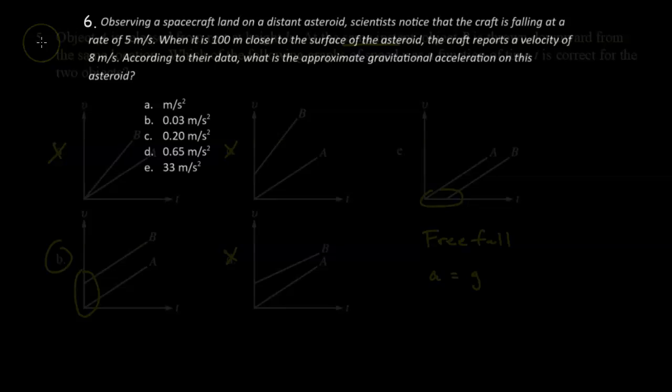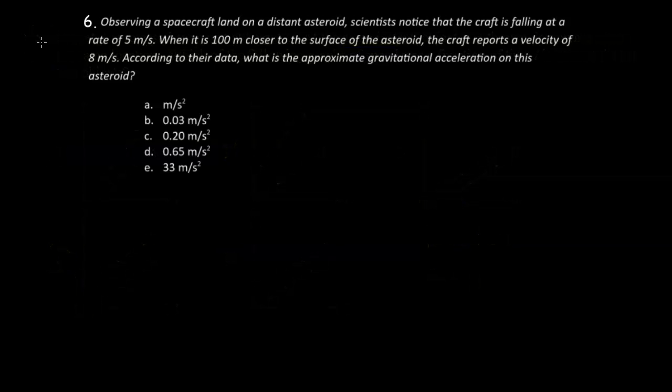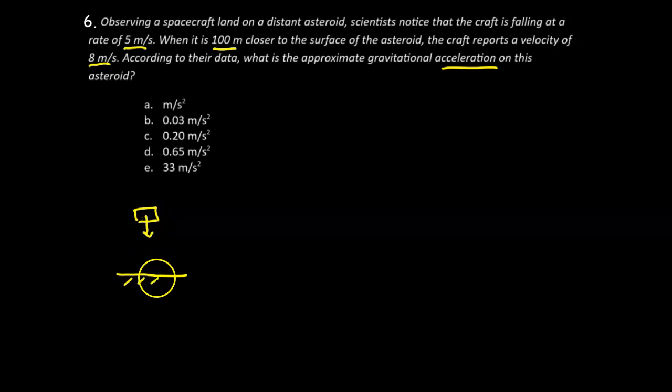Question 6. Observing a spacecraft land on a distant asteroid, scientists notice the craft is falling at a rate of 5 meters per second when it is 100 meters closer to the surface of the asteroid. The craft reports a velocity of 8 meters per second. According to their data, what is the approximate gravitational acceleration on this asteroid?